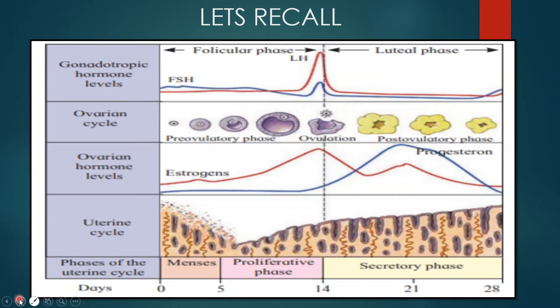Let's recall what we studied in the last module. We studied about the menstrual cycle, in which we saw the different hormones and different phases, and even the changes in the uterus and the ovarian cycle. The menstrual cycle lasted from day 0 to day 28. On average, the normal menstrual cycle is 28 days.